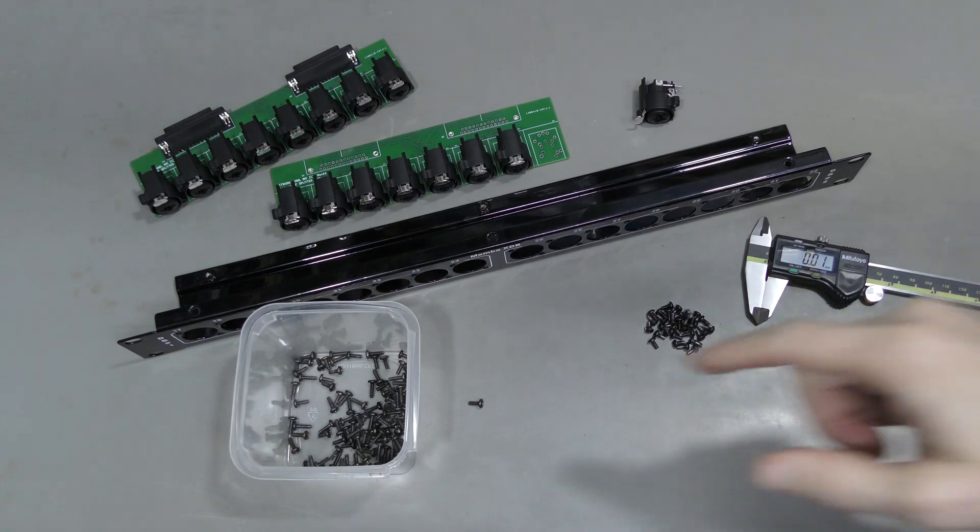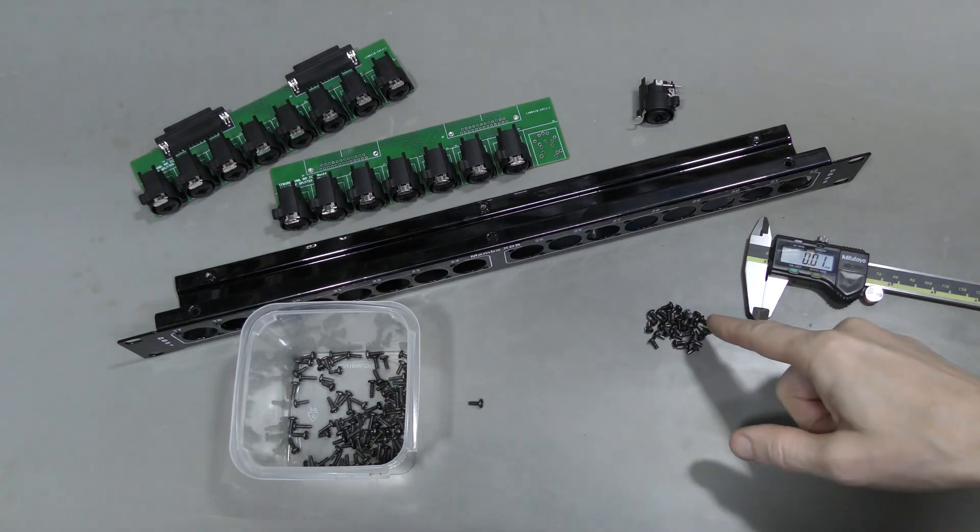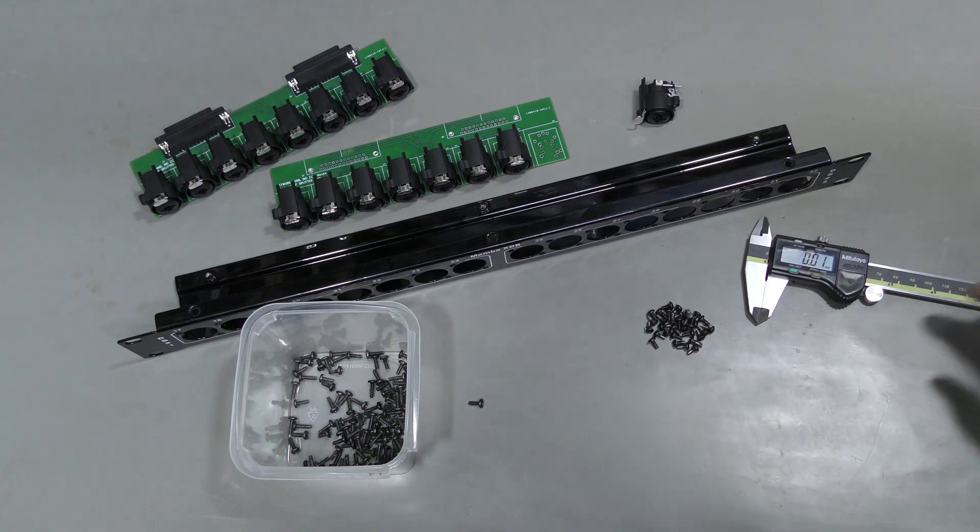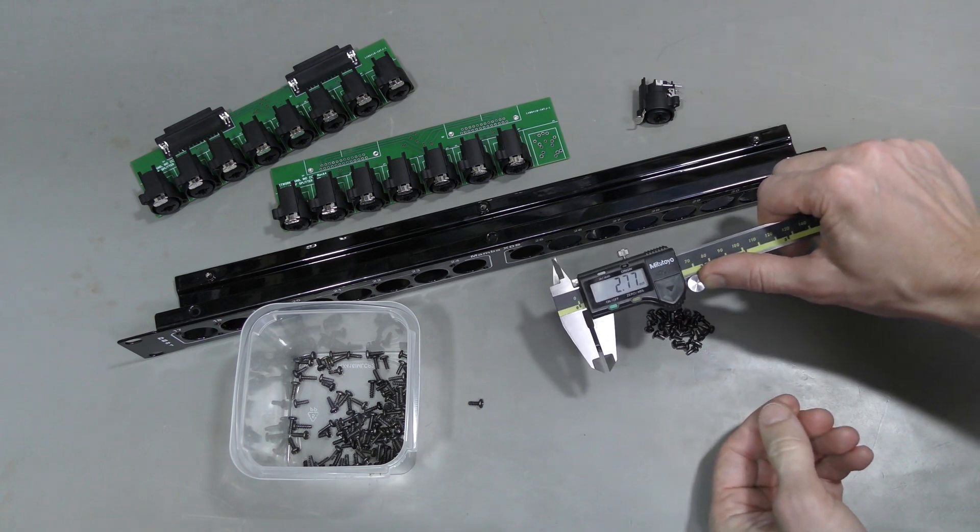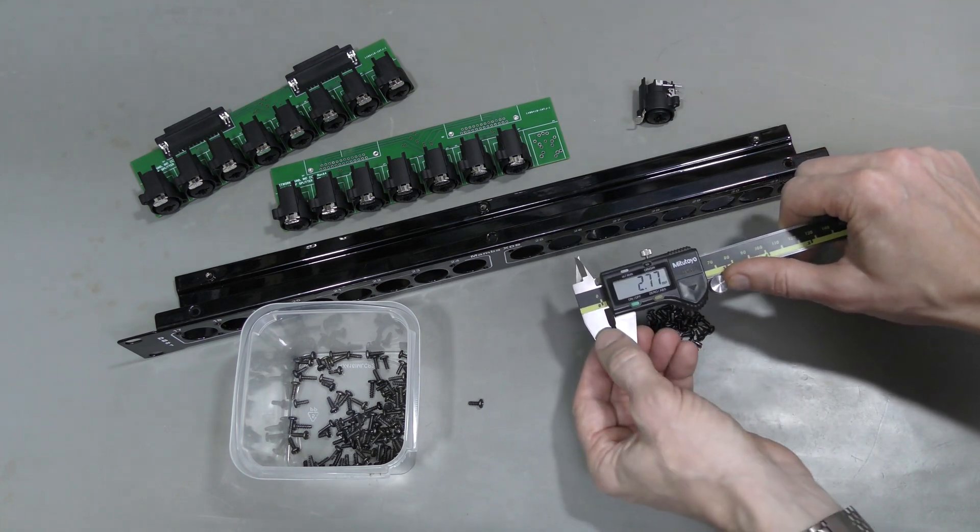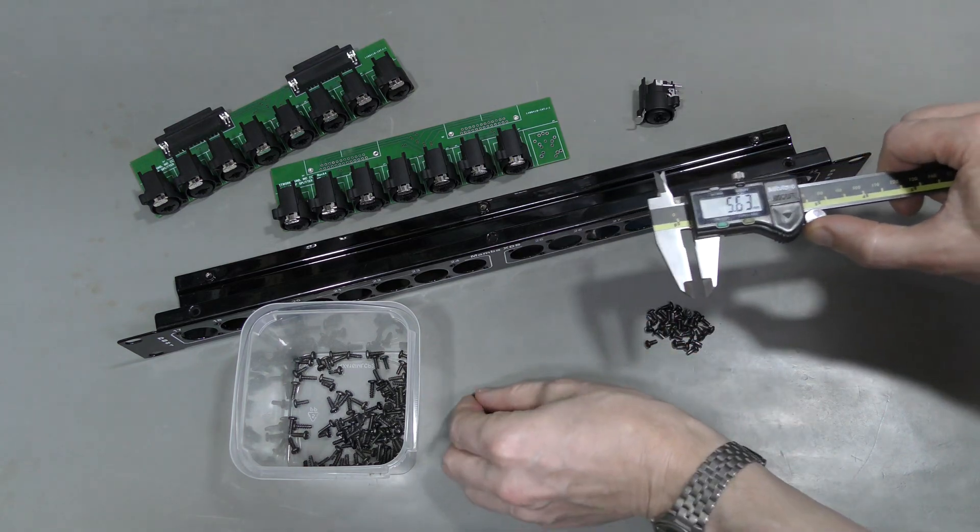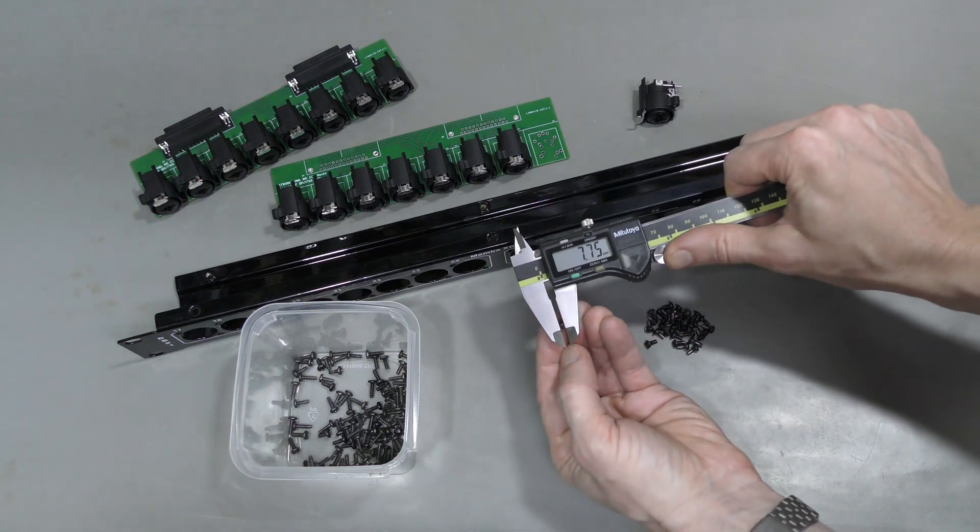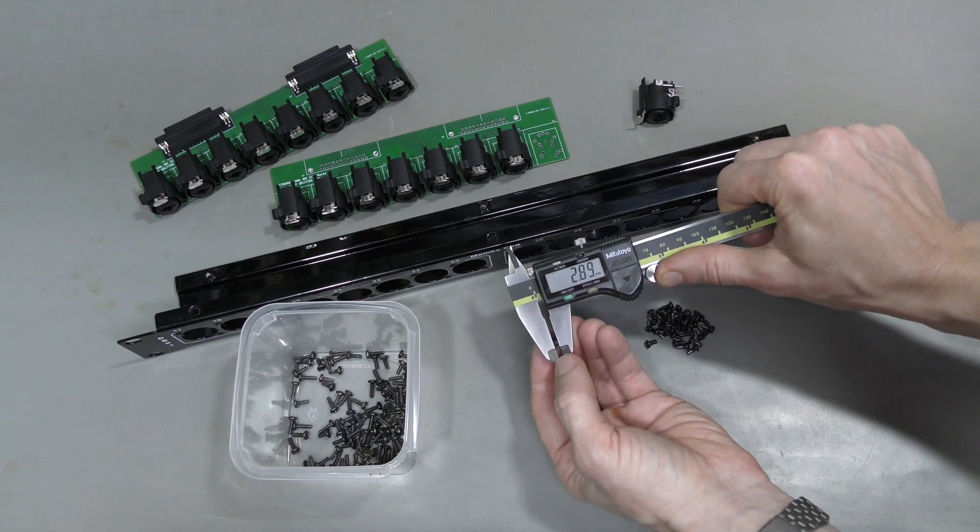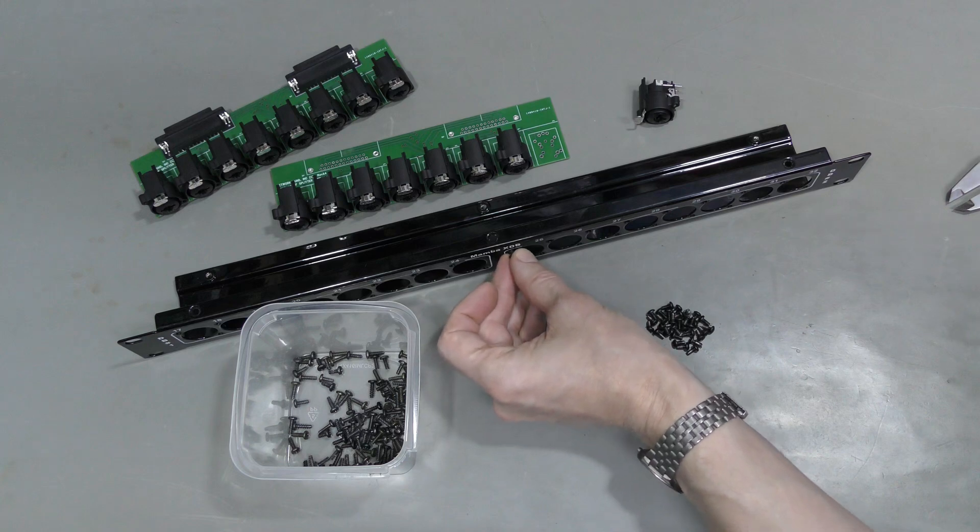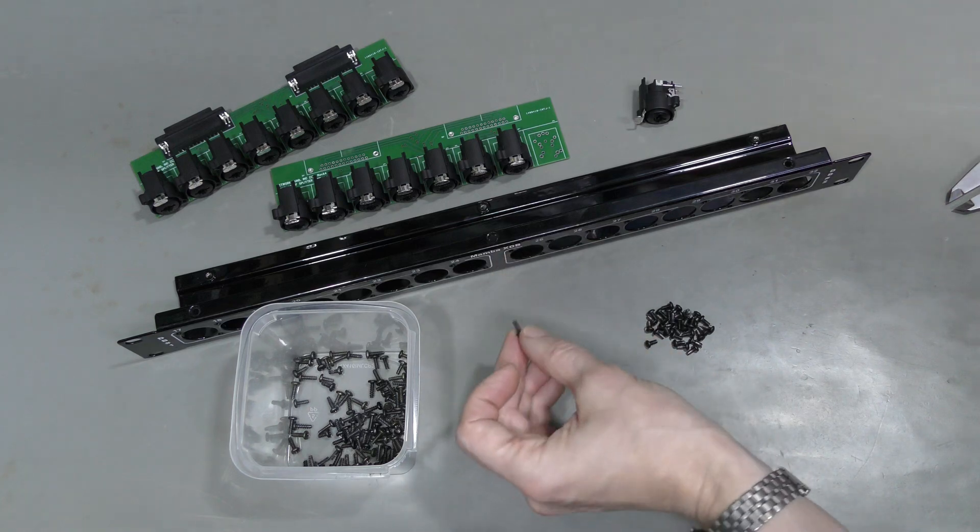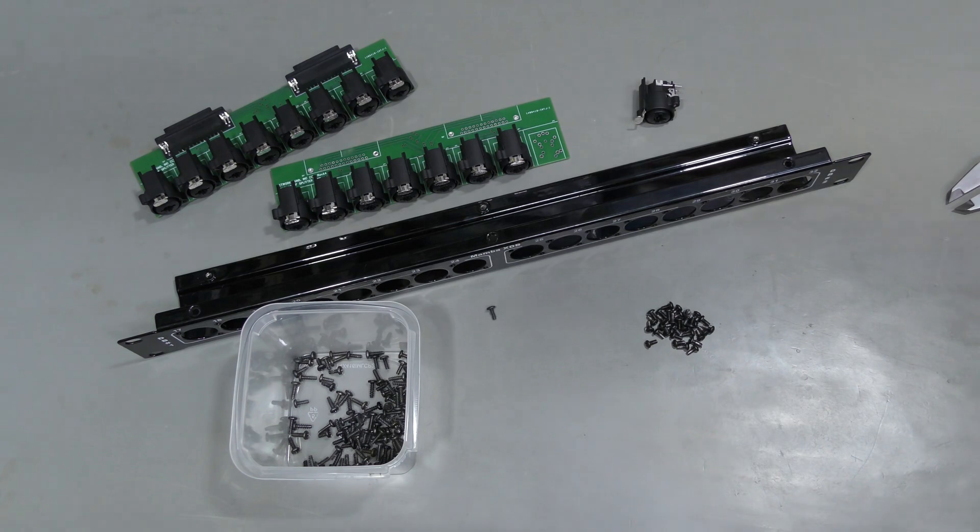I have some self-tapping screws to replace the original machine screws. Let's measure the original ones. About 2.8 millimeters. And self-tappers are slightly larger, about 2.9. And they still go through these holes just fine. So, they should cut into plastic perfectly.